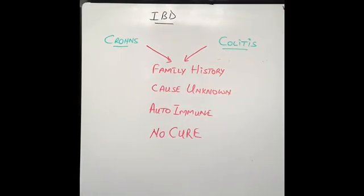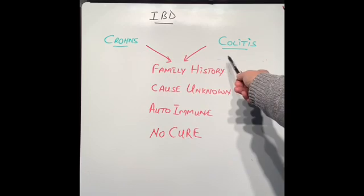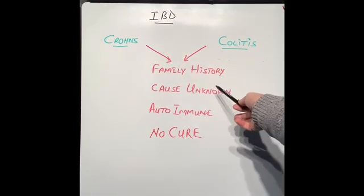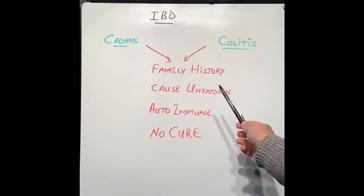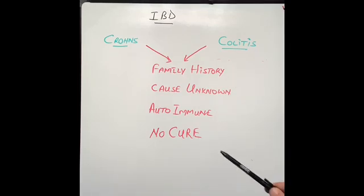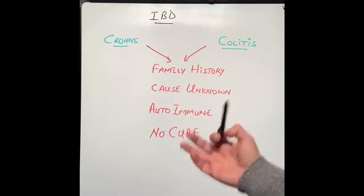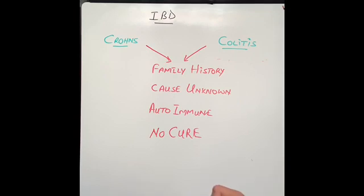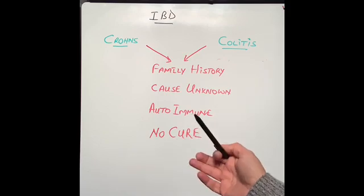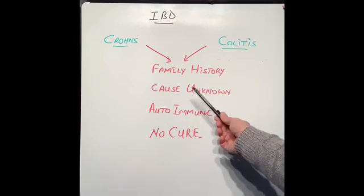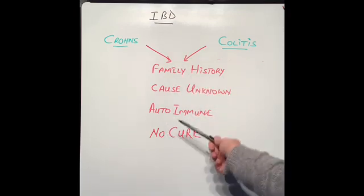What are the similarities between these two conditions? First, there is a family history component — one in five people have a family history of it, so colitis patients have a greater chance of passing it on to subsequent generations, and so does Crohn's. There is no known cause for either condition at present. Scientists believe it is most likely autoimmune — our own immune system, which defends the body against bacteria and viruses, somehow starts fighting against our own intestine and causing damage.